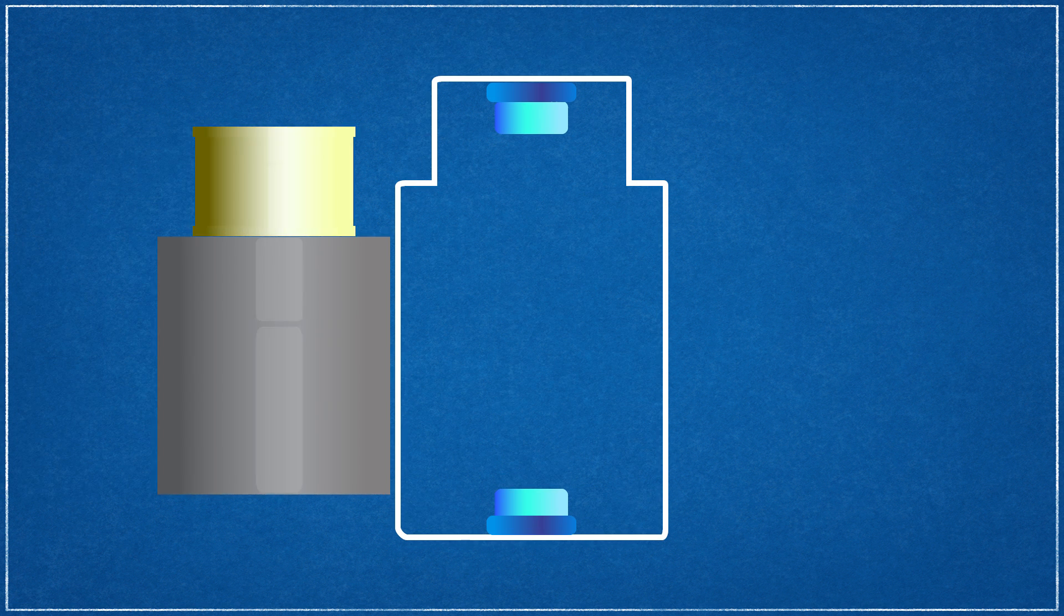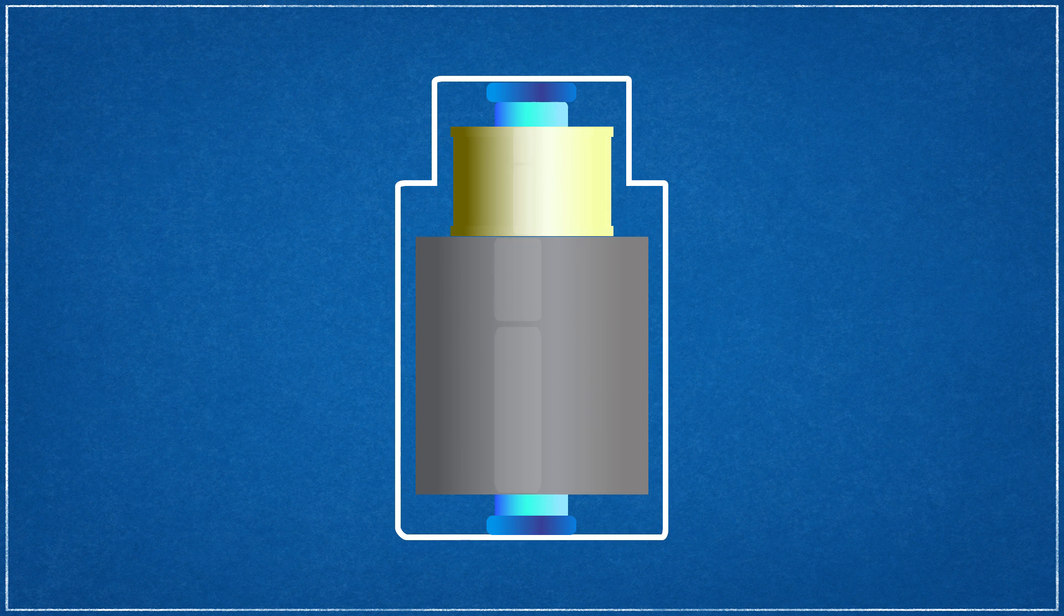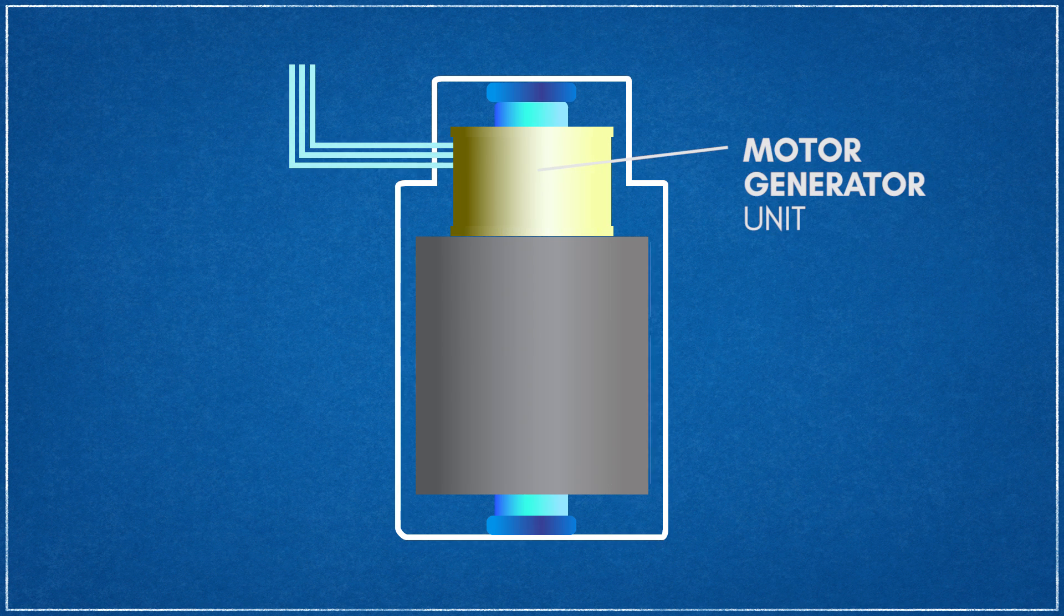The input energy to a flywheel energy storage system is drawn from an external electrical energy source such as a power grid. The flywheel speeds up as it stores energy and slows down when it's discharging to deliver the accumulated energy. The rotating flywheel is coupled to an electrical motor generator unit that performs the interchange of electrical energy to mechanical energy and vice versa.